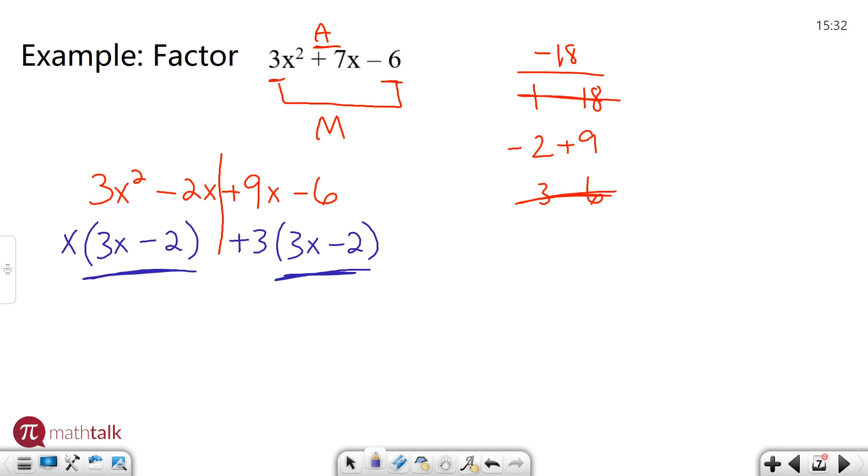And that's what we want because that's one of our factors. So I'm going to go ahead and continue this over here. I know one of my factors is 3x minus 2. The other factor is what's on the outside of the parentheses. So I have an x over here and I have a positive three here. So that's going to be my other factor, x plus three.